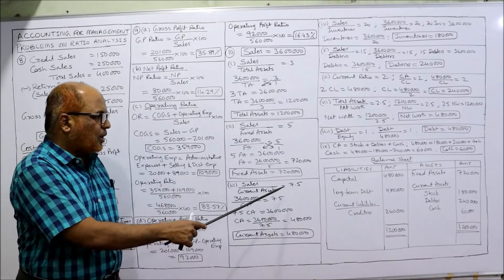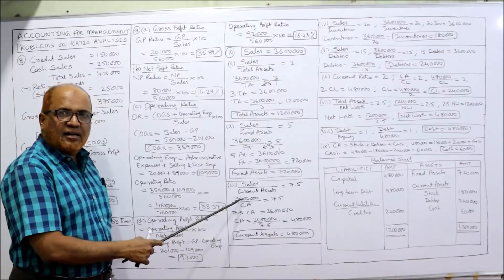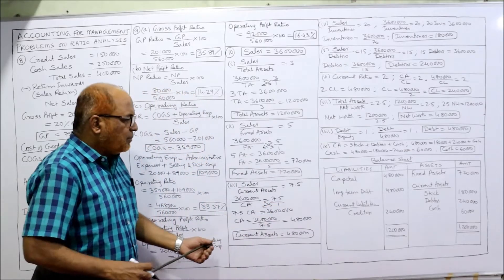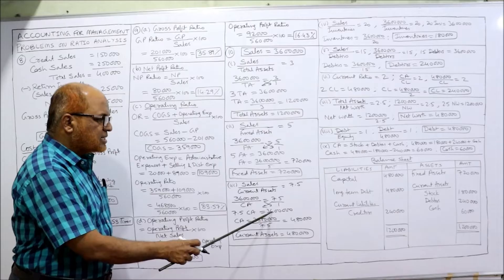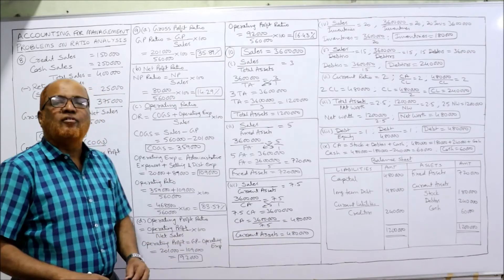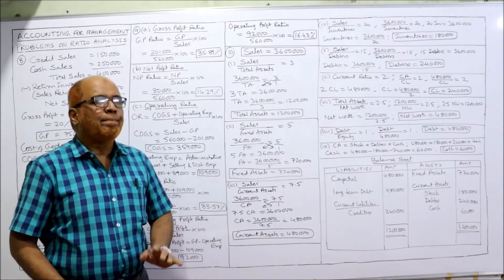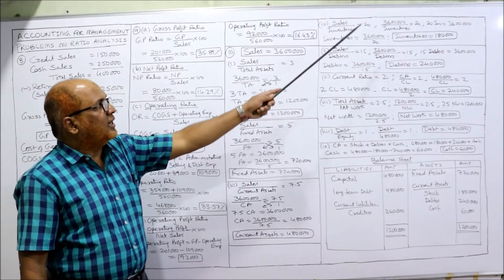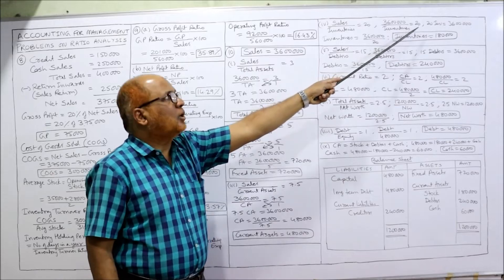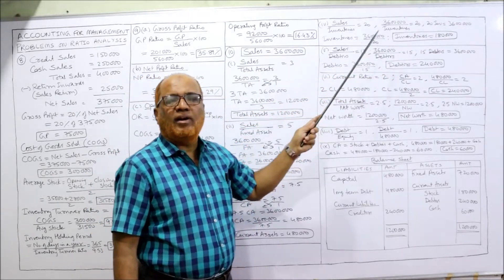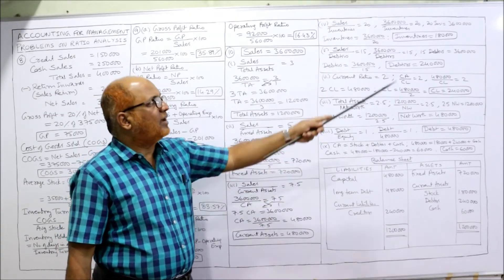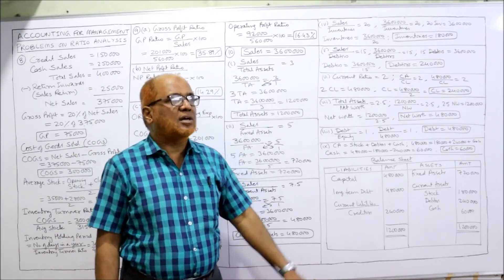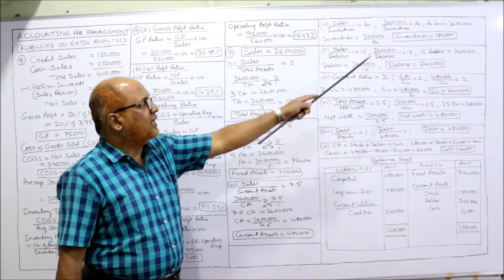Third ratio: sales by current assets = 7.5. So 36 lakh divided by current assets = 7.5. Cross multiply: current assets = 36 lakh divided by 7.5 = 4,80,000. Next ratio: sales by inventories = 20. So 36 lakh divided by inventory = 20. Inventory = 36 lakh divided by 20 = 1,80,000.